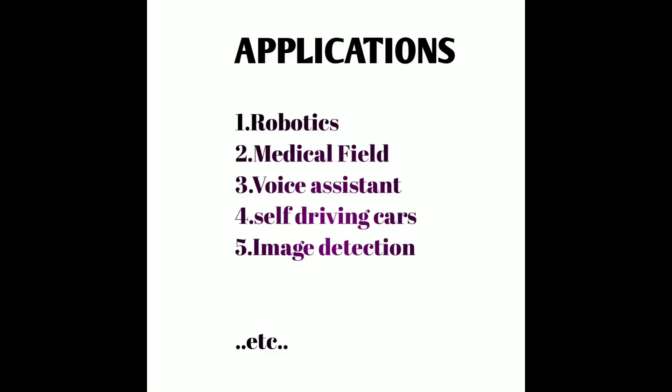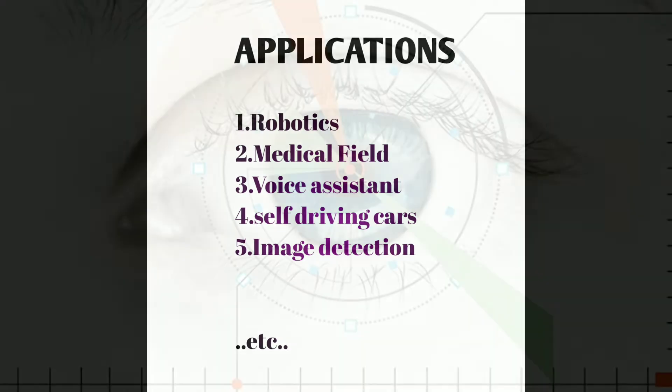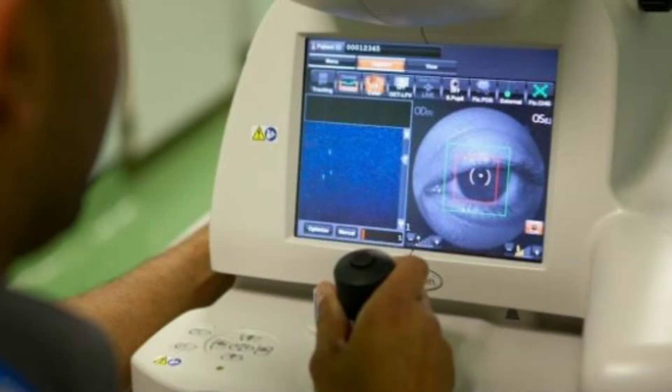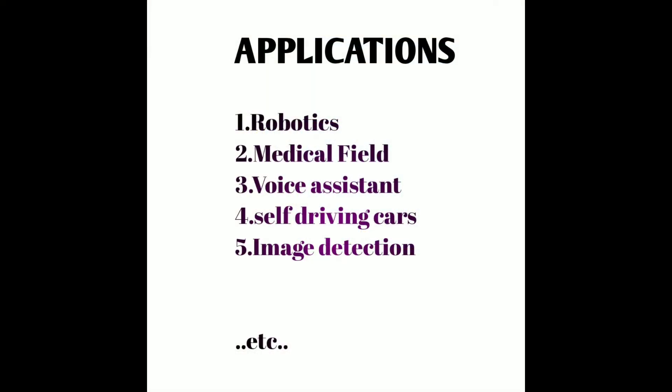The second important application is AI in the medical field. AI is able to detect damage done to the retina or cornea, or any kind of disease that an eye is affected by. There are many applications of AI in the medical field, but this is one of them.